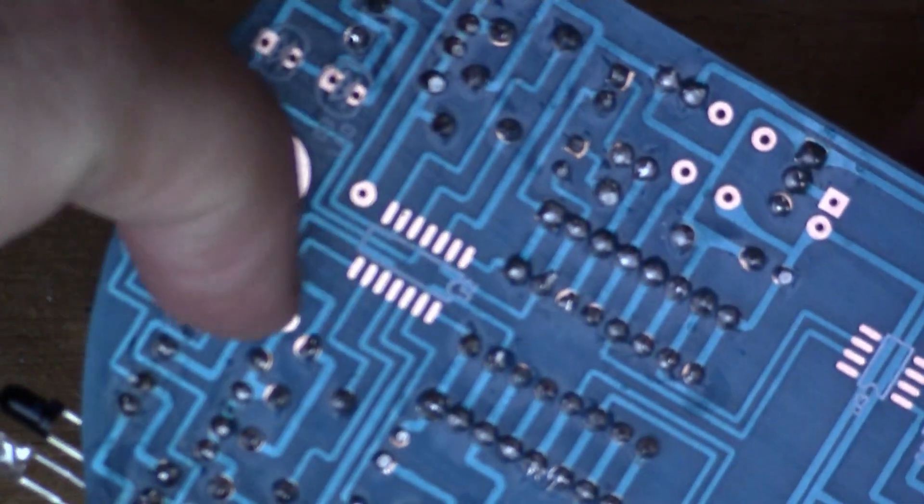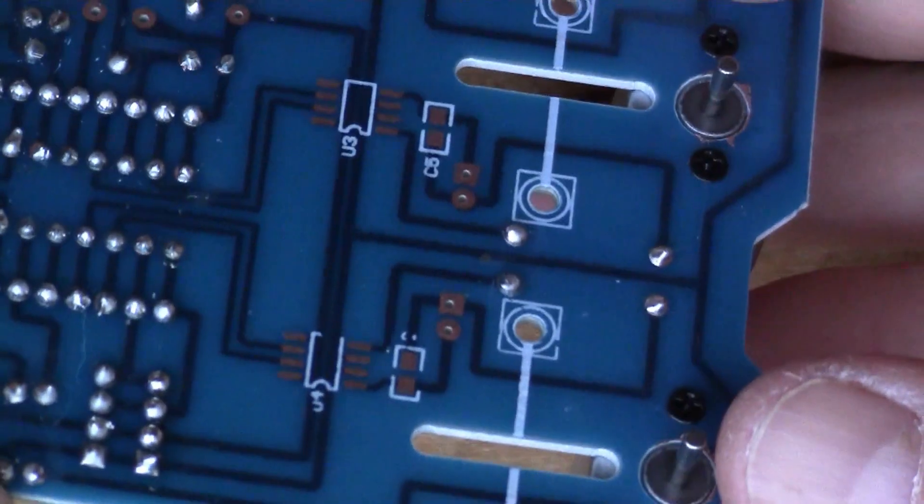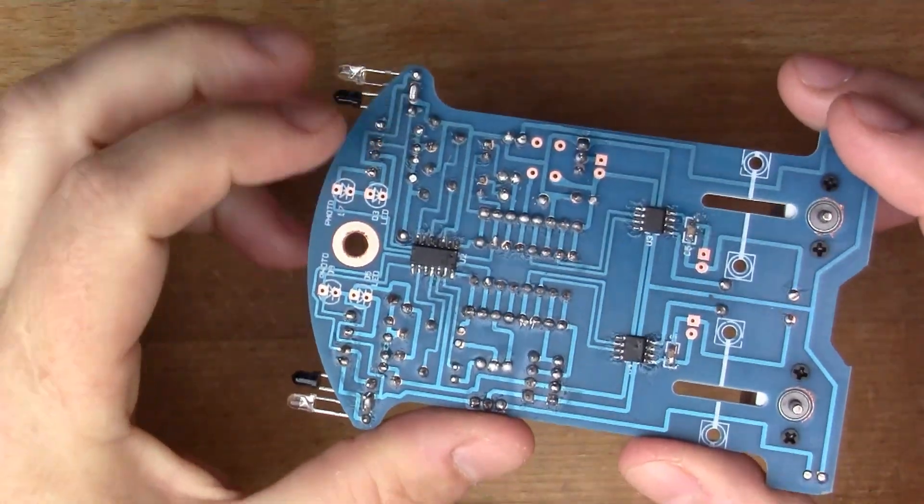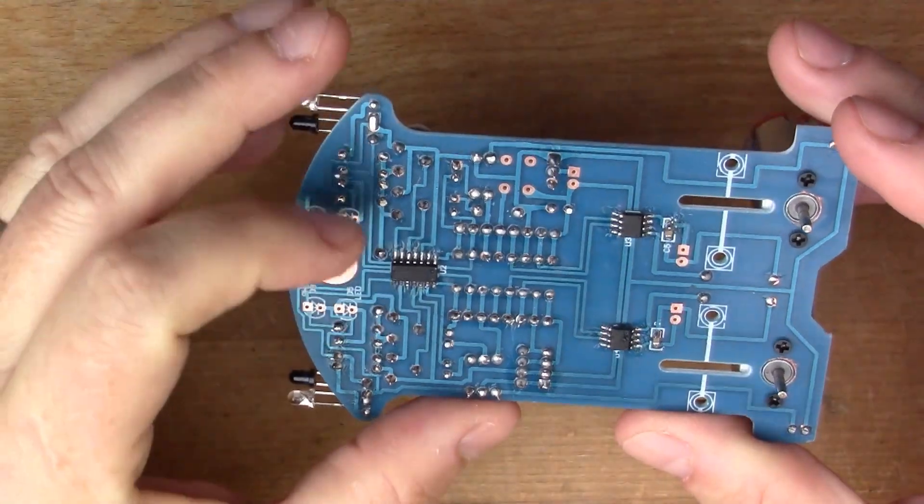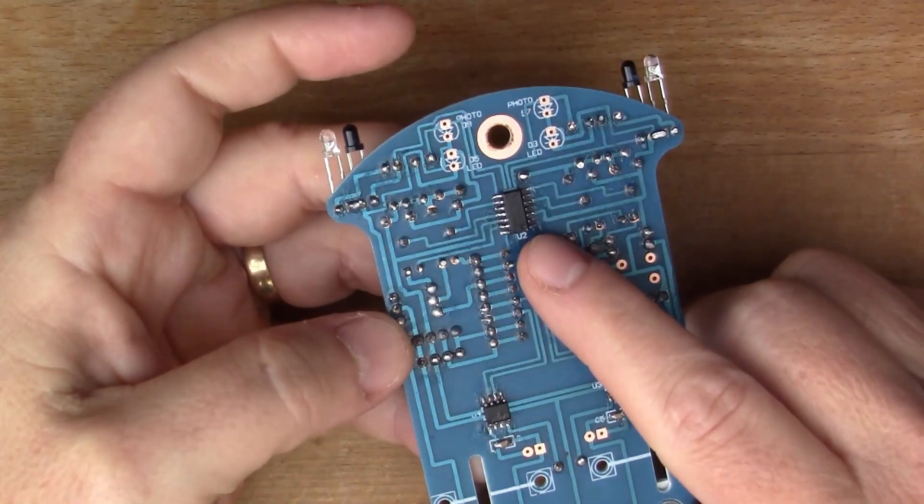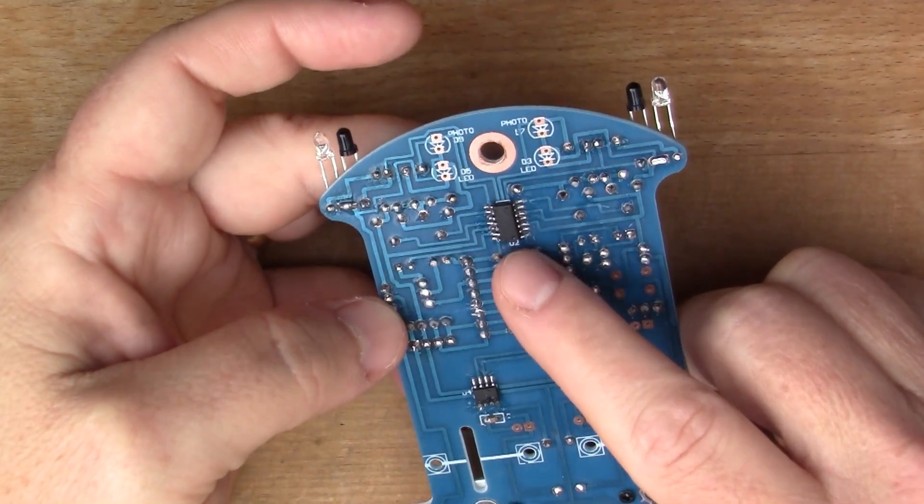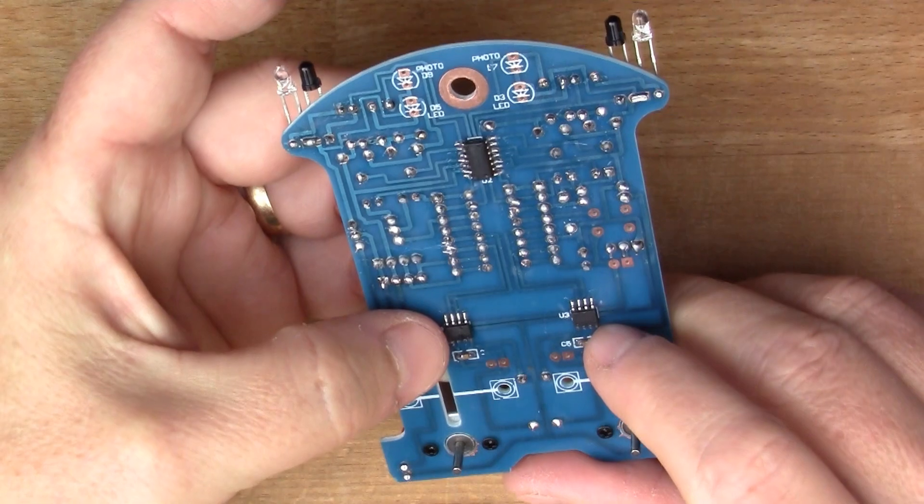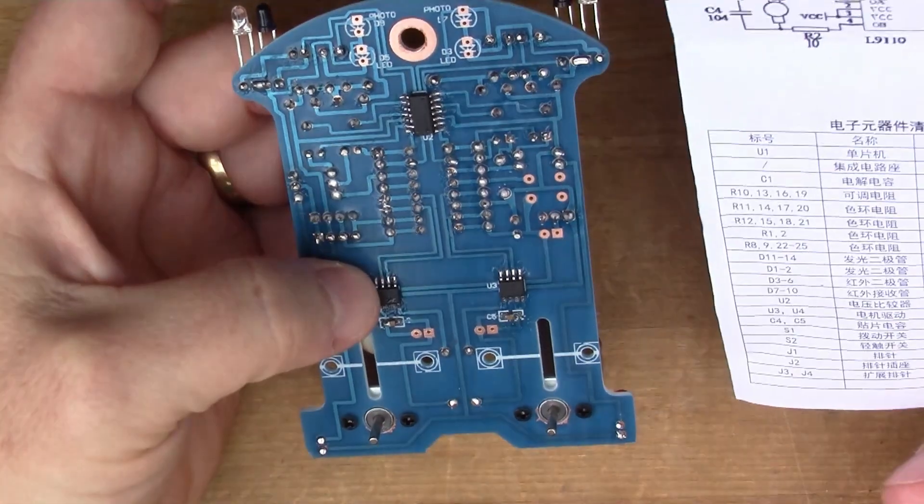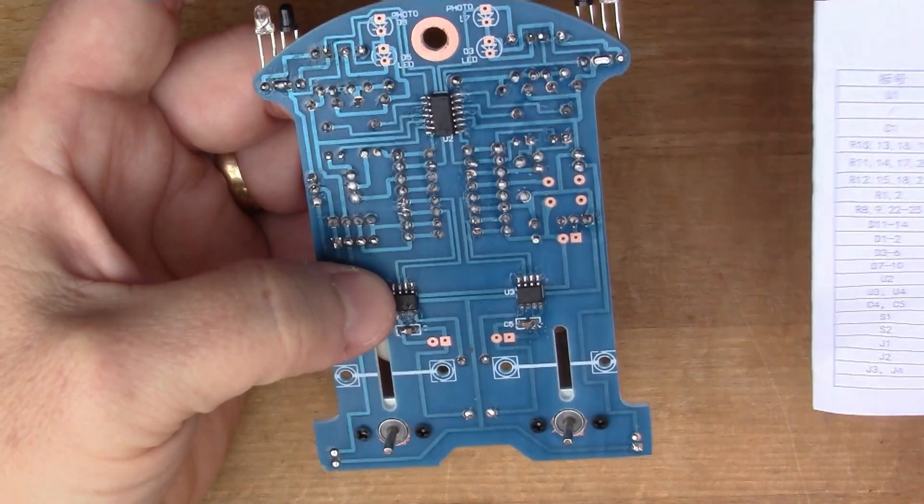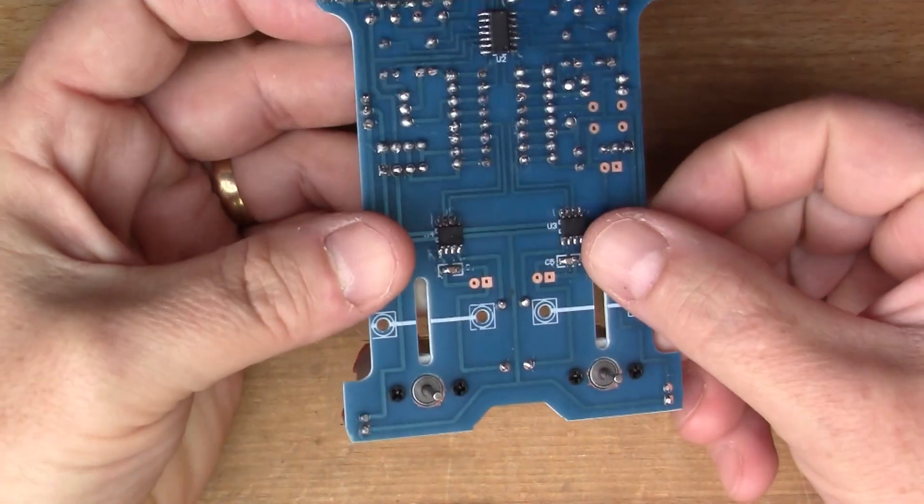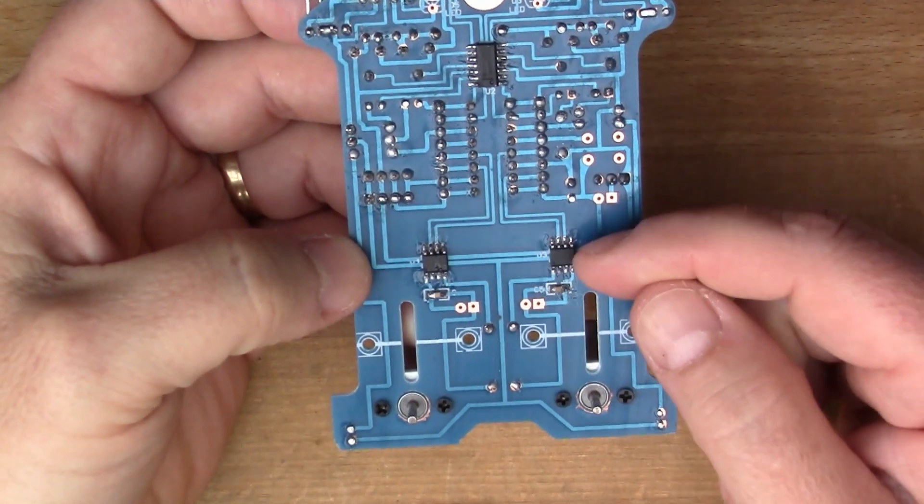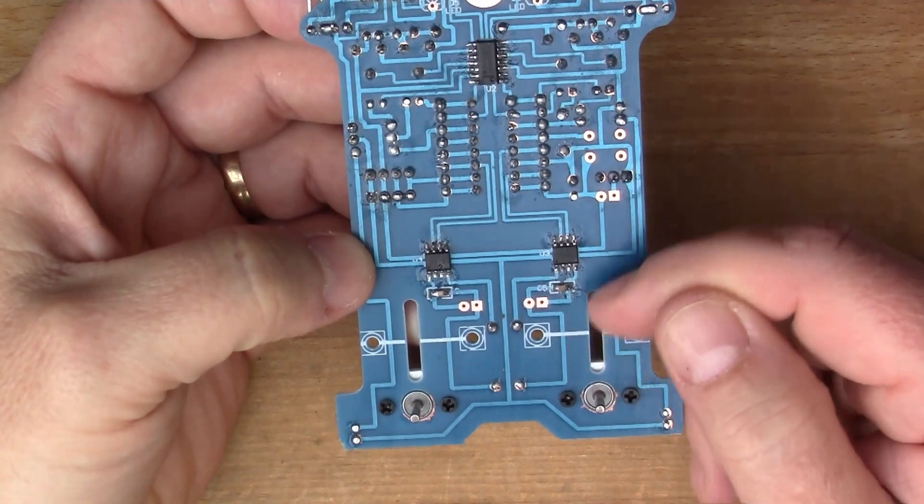I'll just solder on these other surface mount components and try and mount the rest of the hardware. Now the surface mount components are in place. This is the LM339, the comparator multi-comparator, this large chip here. The smaller chips are L9110, which is not a chip I've come across before, but it's obviously some kind of motor driver.